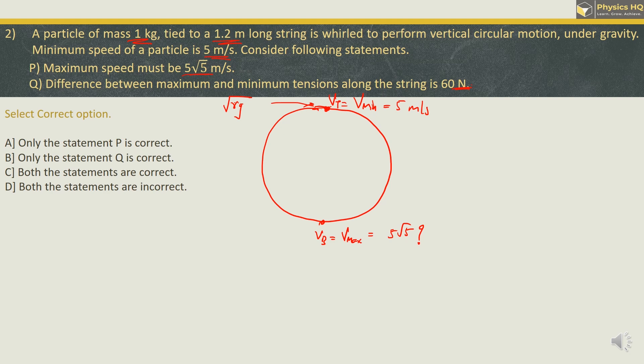The critical minimum speed is given by the formula root of Rg, which is the minimum velocity the particle should have at the top so that vertical circular motion is maintained. This equals root of 1.2 into 10, which gives root of 12, approximately 3.5 — definitely not equal to 5. Therefore, this is not the critical minimum speed, and we cannot apply the formula root 5Rg for the velocity at the bottom.